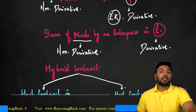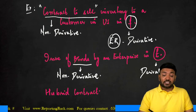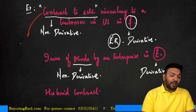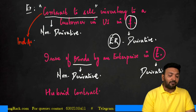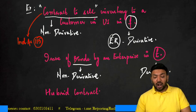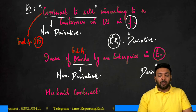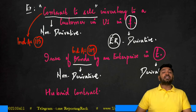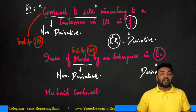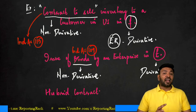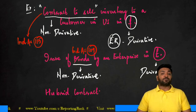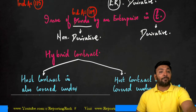Going back to the two examples: the contract to sell is a non-derivative host contract covered as per Ind AS 115, which is contracts with customers. But a bond should be covered under Ind AS 109 because bonds are financial instruments — there is an obligation of the enterprise to pay, and whenever there is an obligation to pay cash, it is a financial liability. So bonds are covered under Ind AS 109, while contracts to sell fall under Ind AS 115.